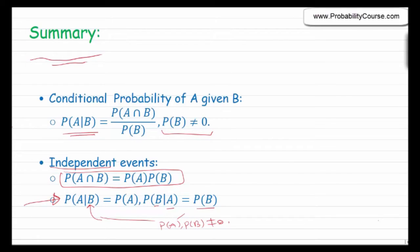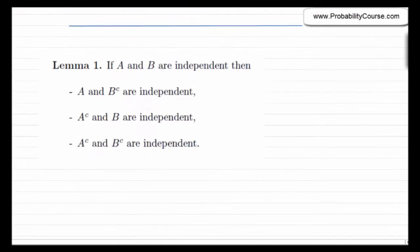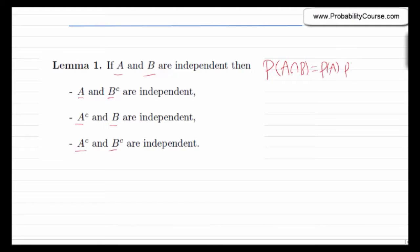Today we would like to continue this discussion and provide some more examples. Let's first look at a simple lemma. The lemma says that if A and B are independent events, then A and B complement are independent, A complement and B are independent, and A complement and B complement are independent. This is quite intuitive, but we can also prove it using probability rules. We know that A and B are independent, so probability of A and B equals probability of A times probability of B.